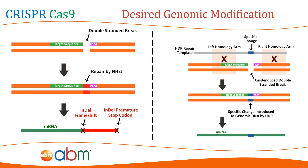If homology-directed repair is needed for the genome editing, however, the choice of the target site is far more constrained by the desired location of insertion. For more information about non-homologous end-joining and homology-directed repair, please see our introductory video on the CRISPR-Cas9 system.